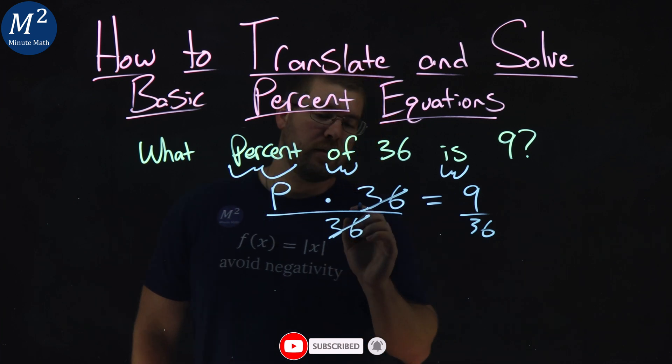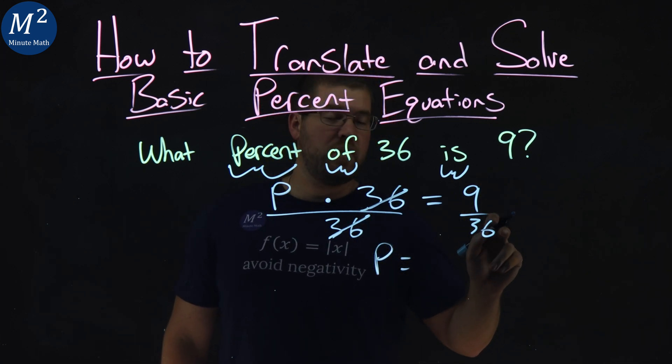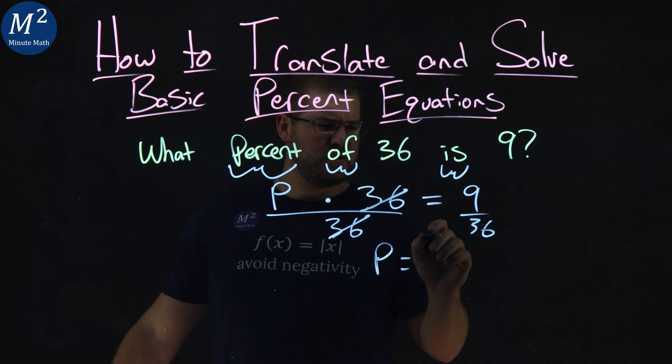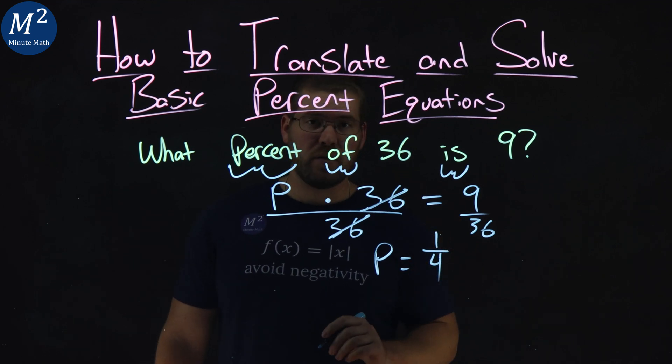36 cancels here on the left, giving me P by itself. And 9 over 36 simplifies to be the fraction, well, one-fourth.